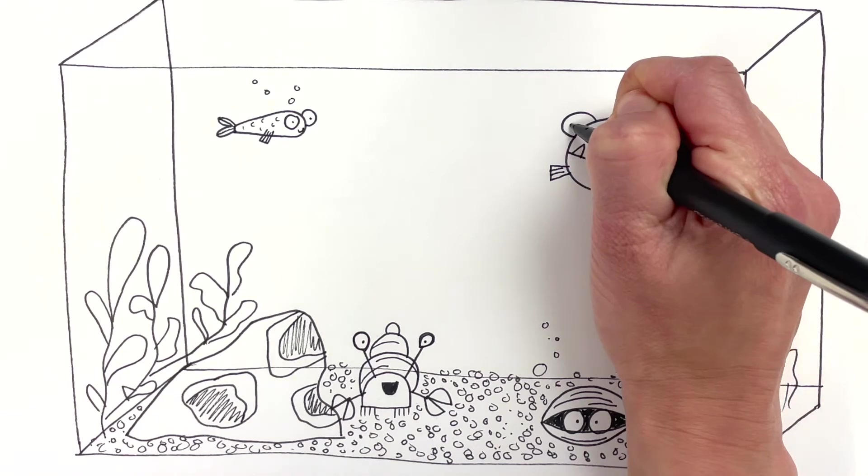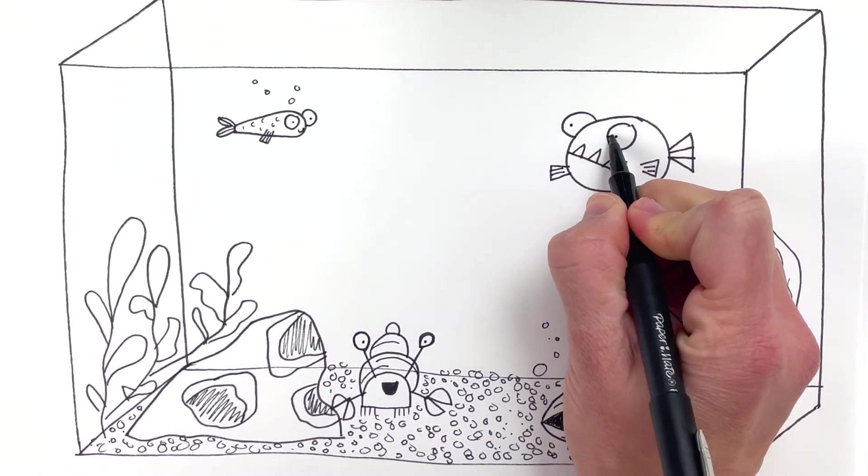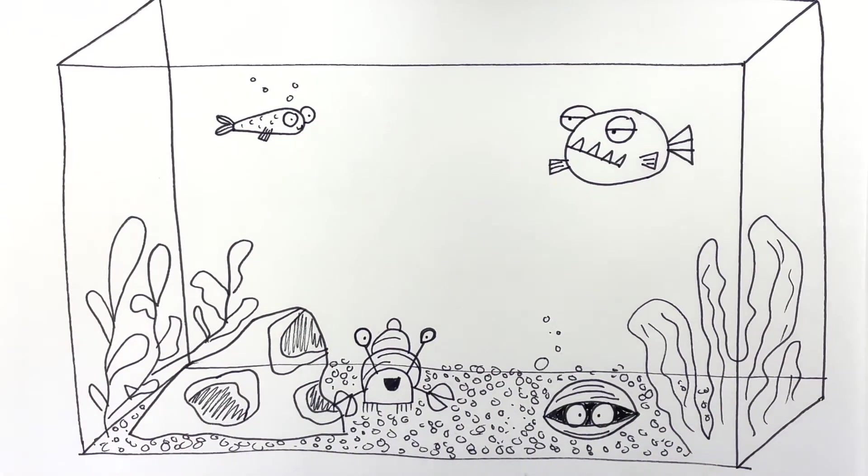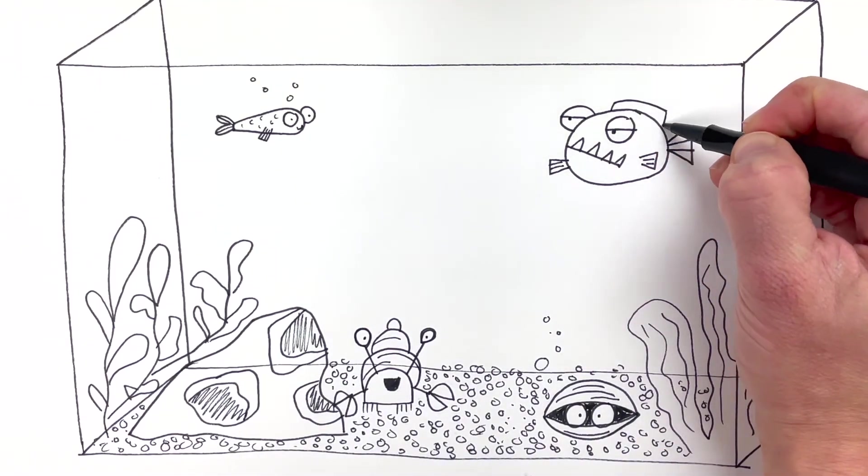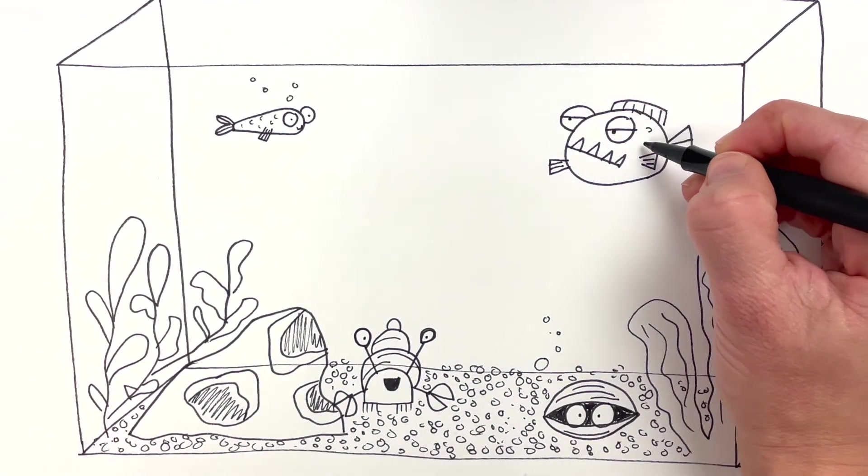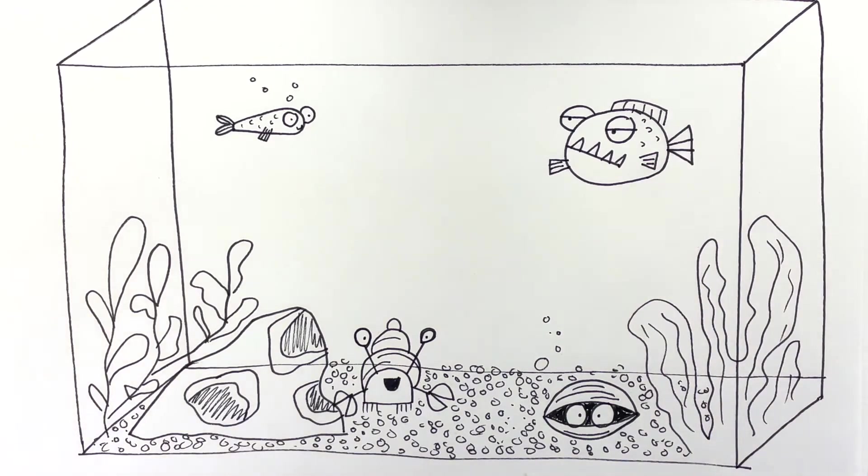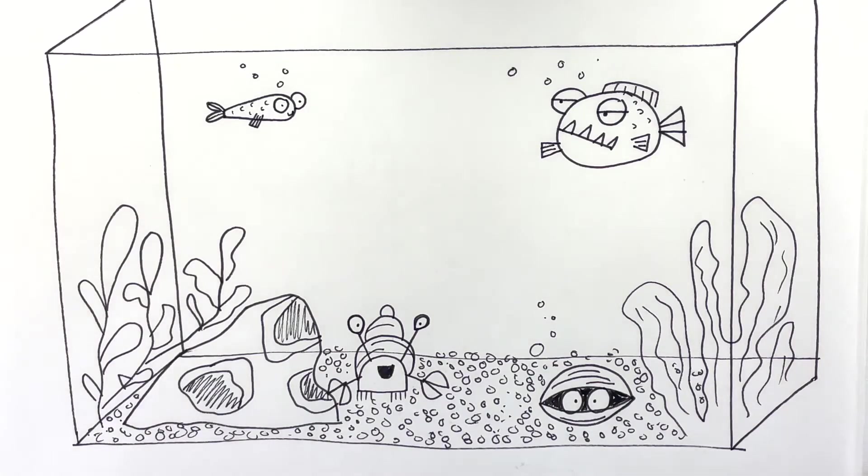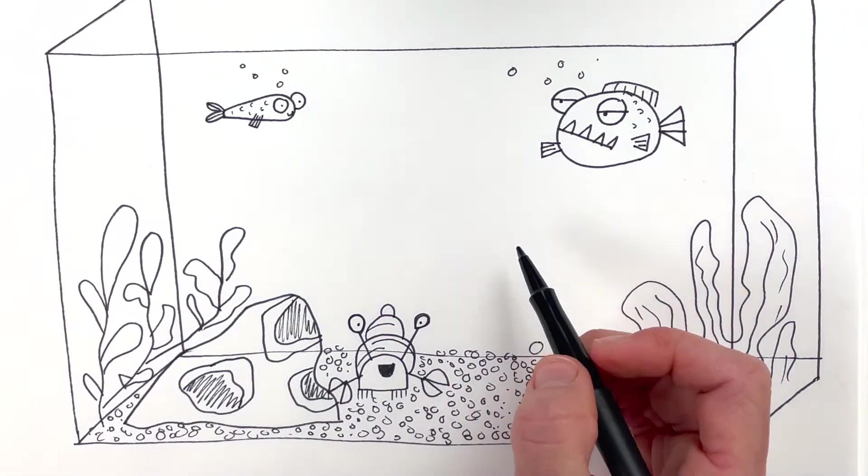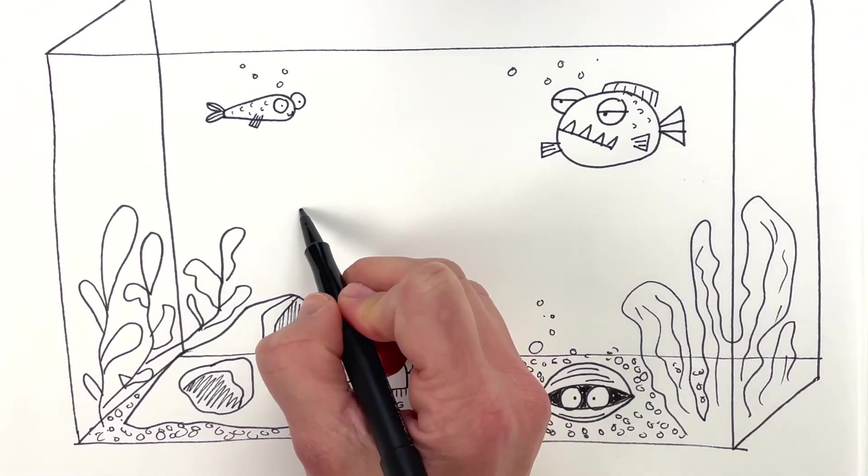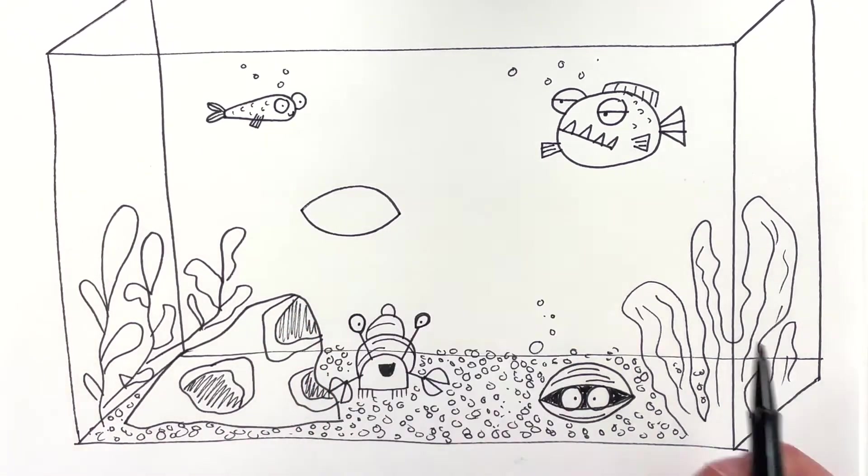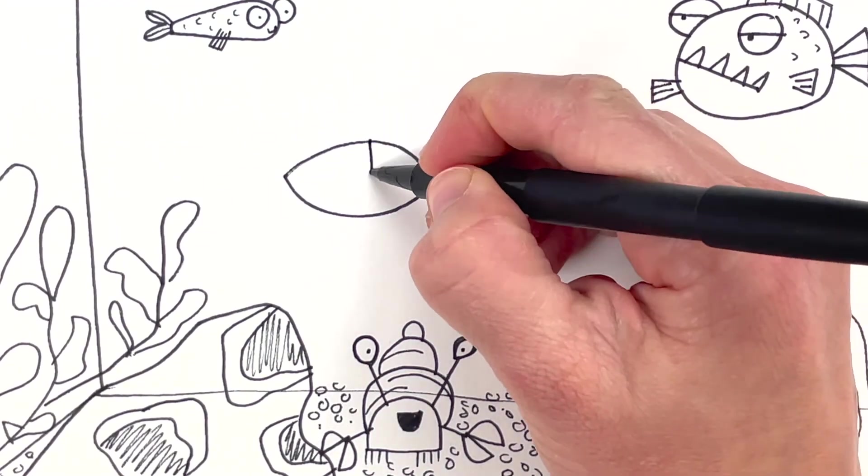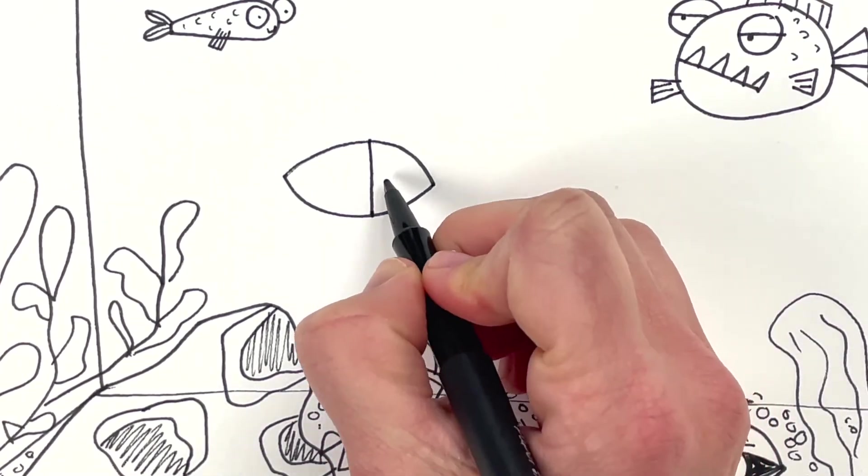Some eyes. And since he'll be grumpy I'm just gonna give him like some like flat eyelids like I don't even care guys how about like a little fin on top there some scales and bubbles blub blub blub okay awesome.